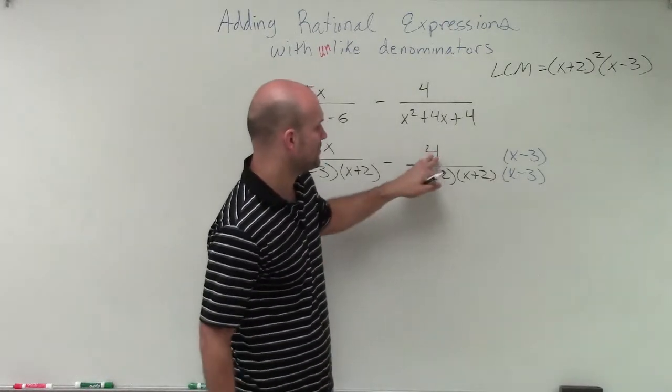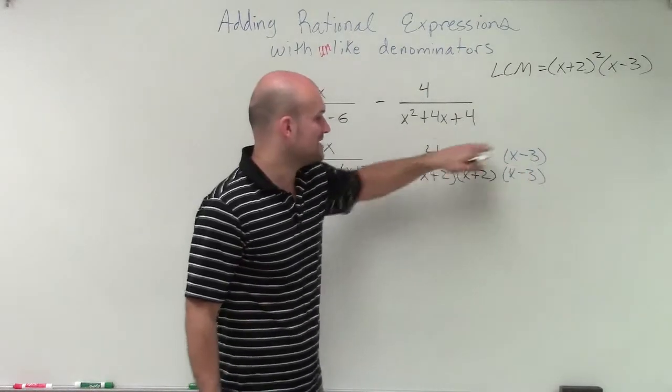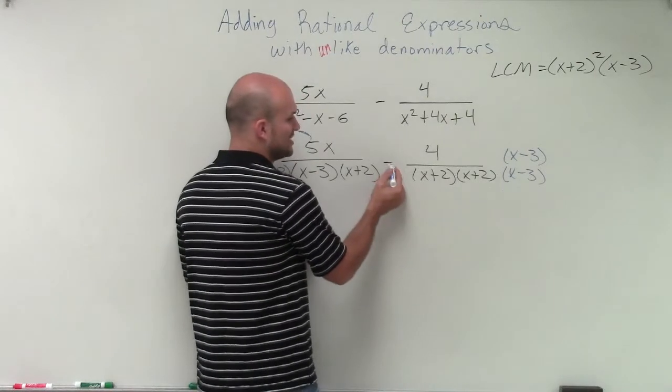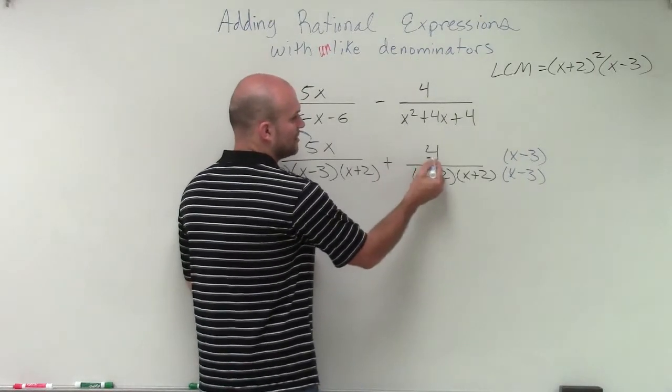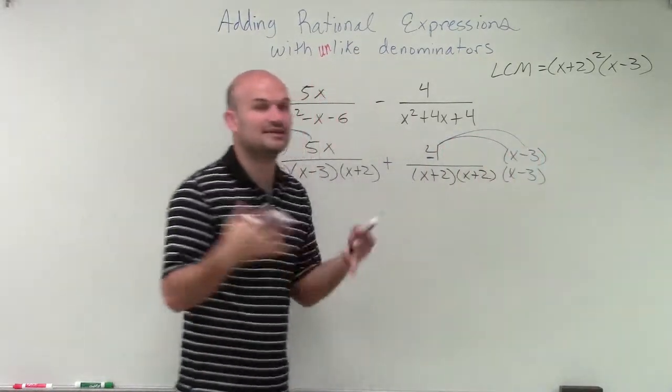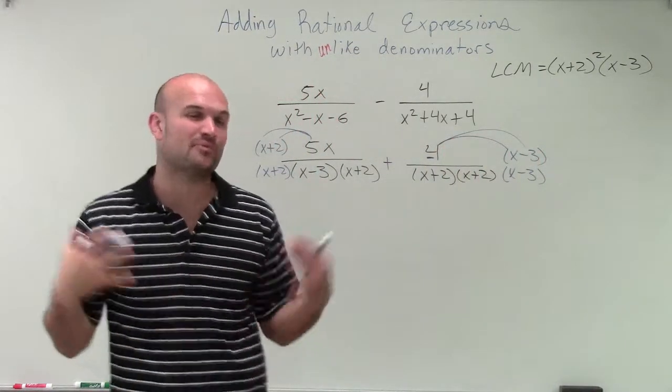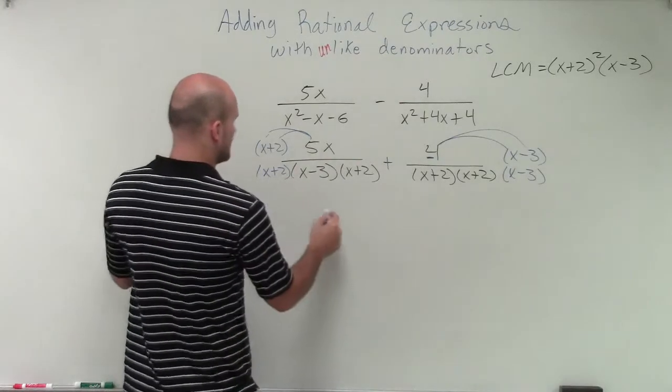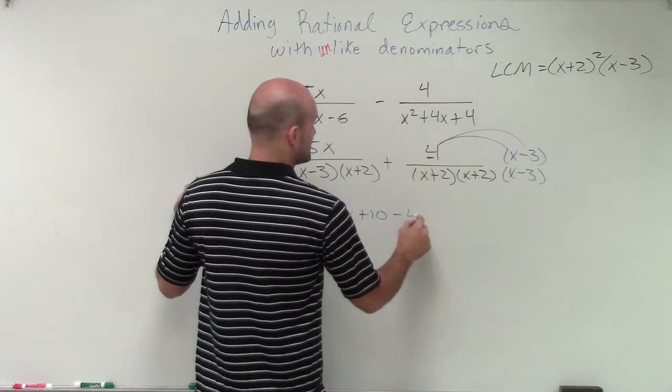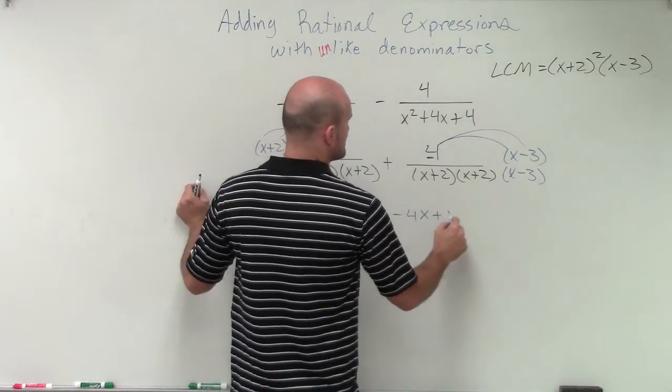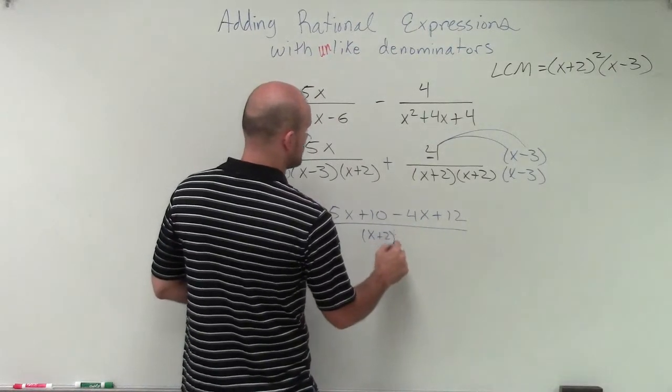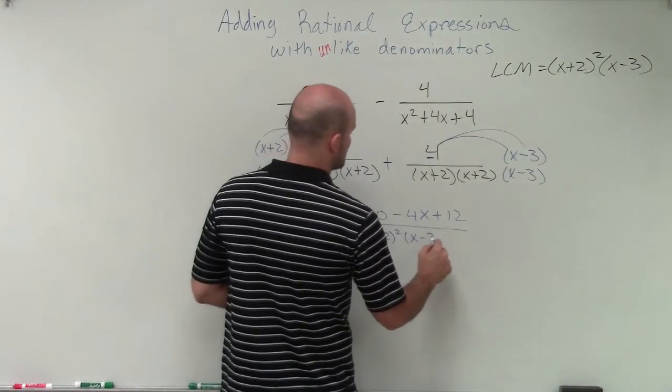Now, previously, what I've done is I've multiplied the positive 4 times both terms, and then kept it in parentheses to multiply it by the negative. Well, in this case, let's just change this subtraction problem to an addition problem. So therefore, it's a positive negative 4. Now, when I apply distributive property, I only need to get rid of my parentheses once. So here, I have 5x squared plus 10x minus 4x plus 12. And that's going to be all over my LCM, which is going to be x plus 2 squared times x minus 3.